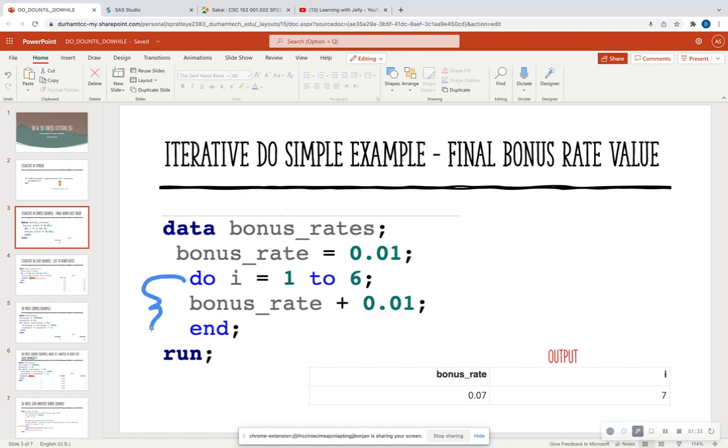Notice I said six additional times, because this first bonus rate value of 1% is going to be your first iteration. So I iterate, and my first iteration is going to be where I start at. And then I'm going to keep adding 1% to that six times. So we get our final output here, where you see that we've iterated seven times, and the final bonus rate that we got was 7%. Keep in mind that i is 7, because this first initial value counts as 1, and 1 plus 6 equals 7.